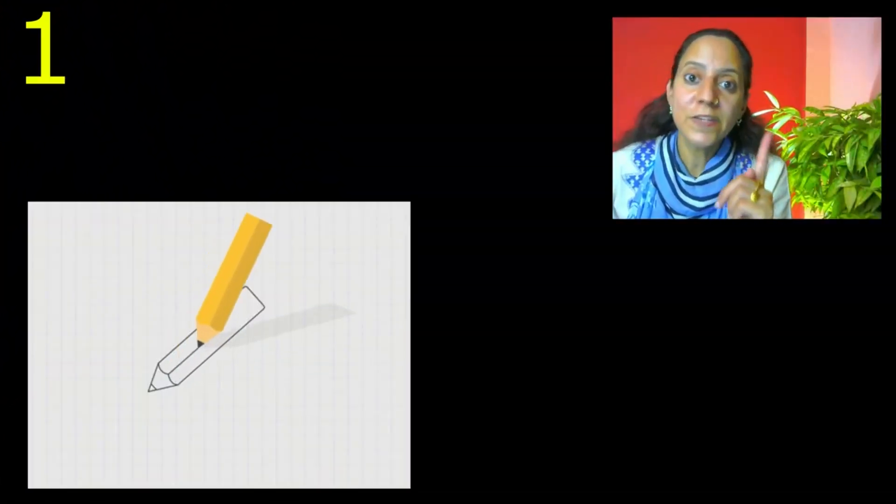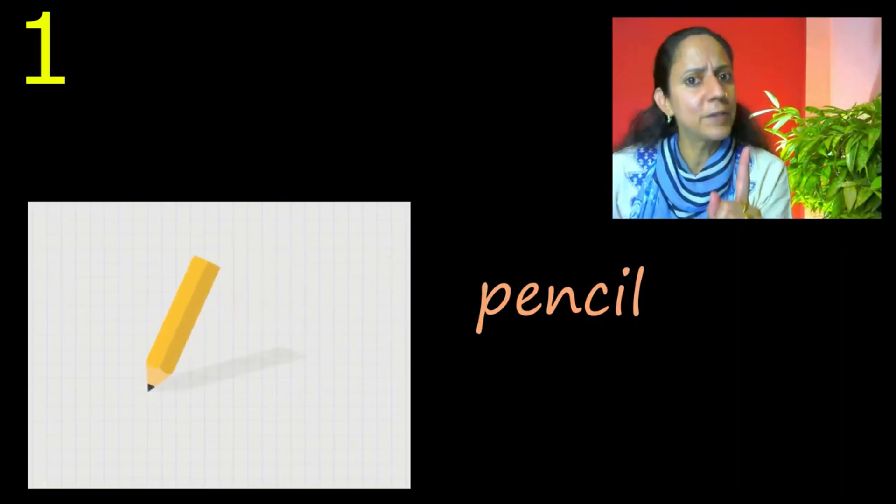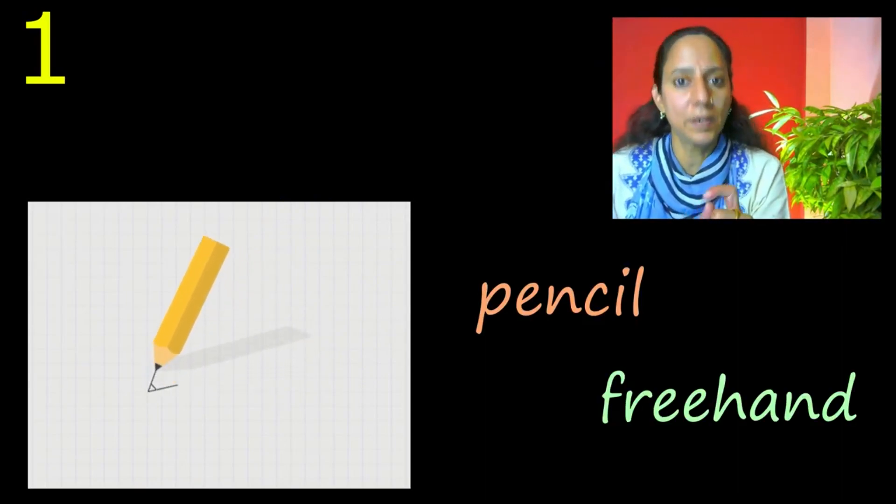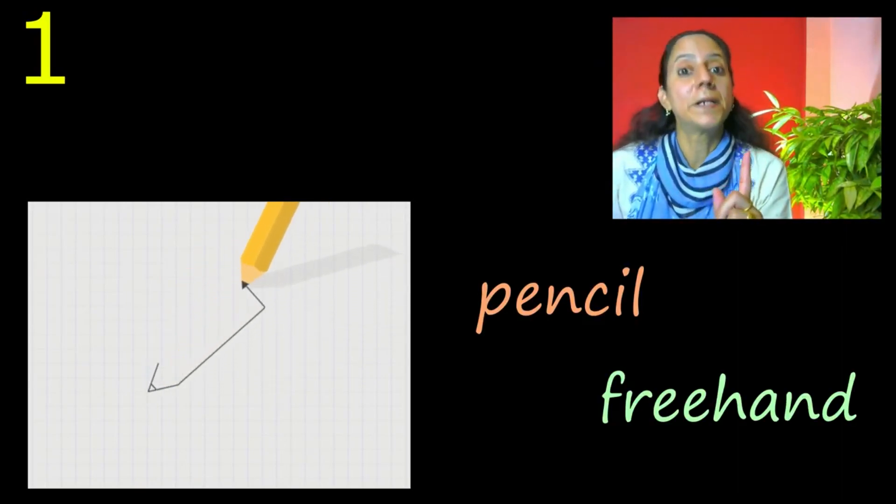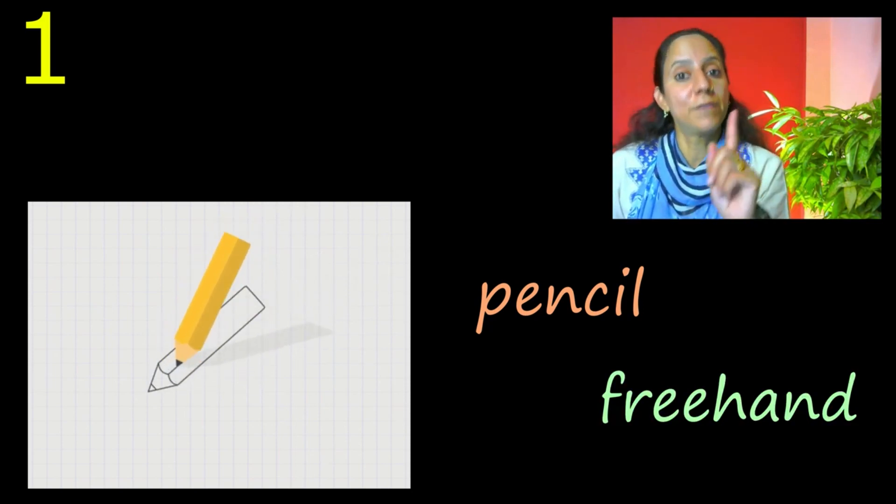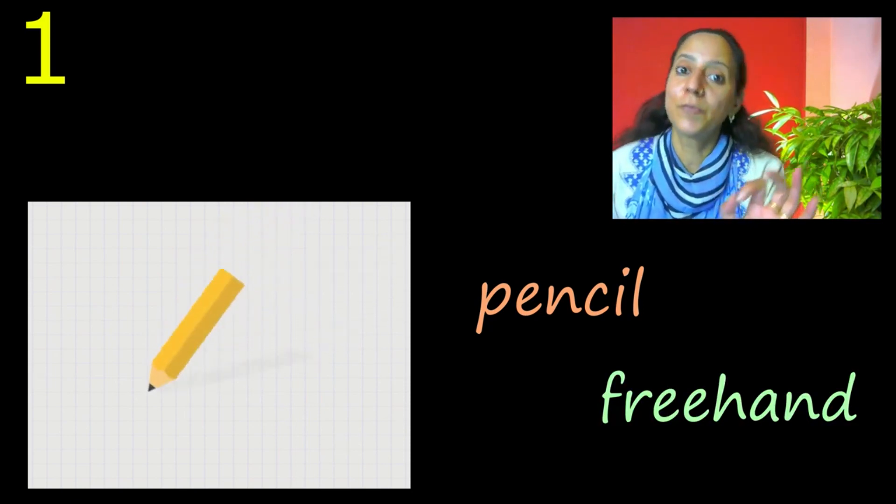First thing, diagrams should always be drawn with pencil and freehand. Labeling can be done with the help of a scale, but drawing will always be with pencil and freehand.